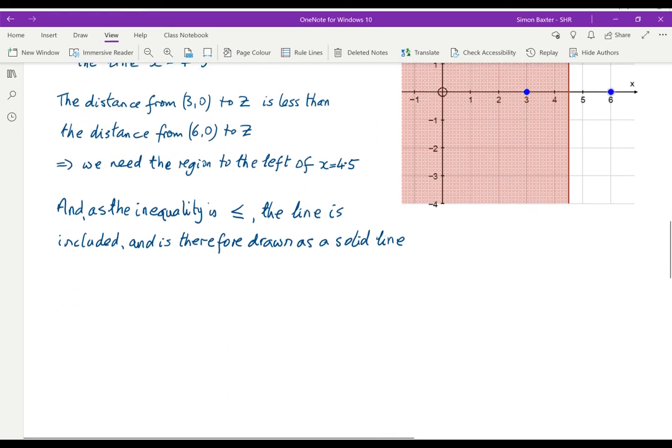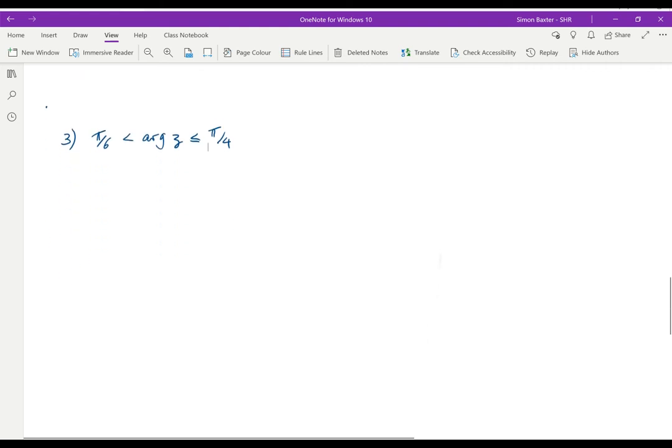Another easy idea. Let's look at this one. What happens if we have pi by 6 less than arg z less than or equal to pi by 4?